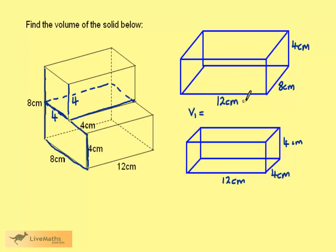The volume for the first one is 12 times 8 times 4, which gives us 384 cm cubed.